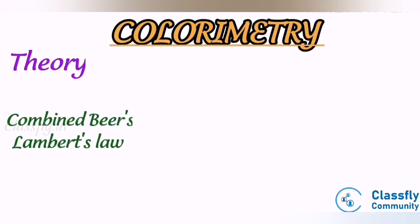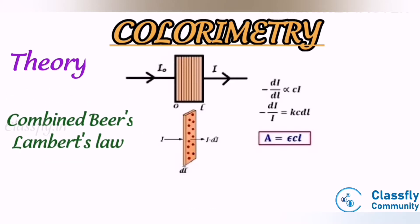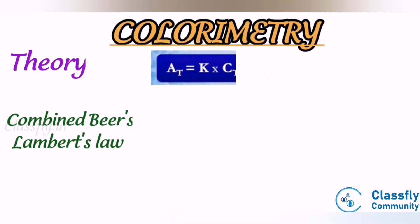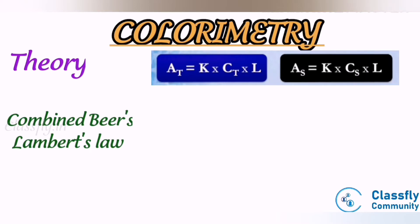Combined Beer-Lambert Law: the amount of light transmitted through a colored solution decreases exponentially with increases in concentration of the colored solution and increases in path length of the cuvette or thickness of the colored solution. Combining these two laws: A is directly proportional to c × l, expressed as A = K × c × l.